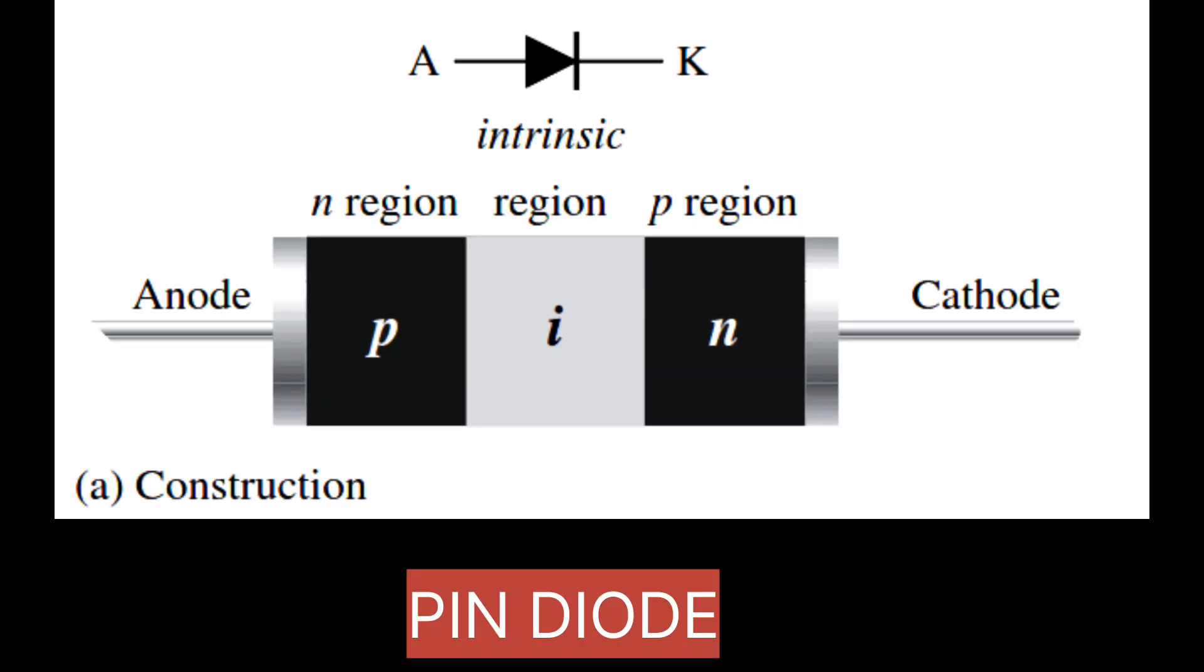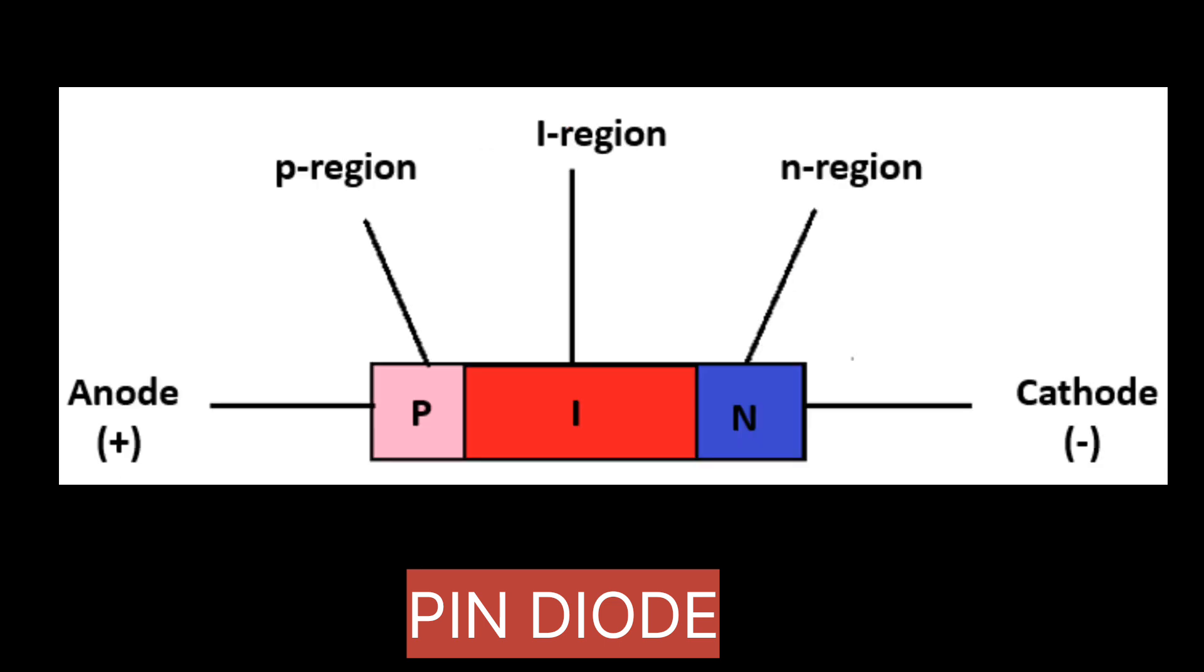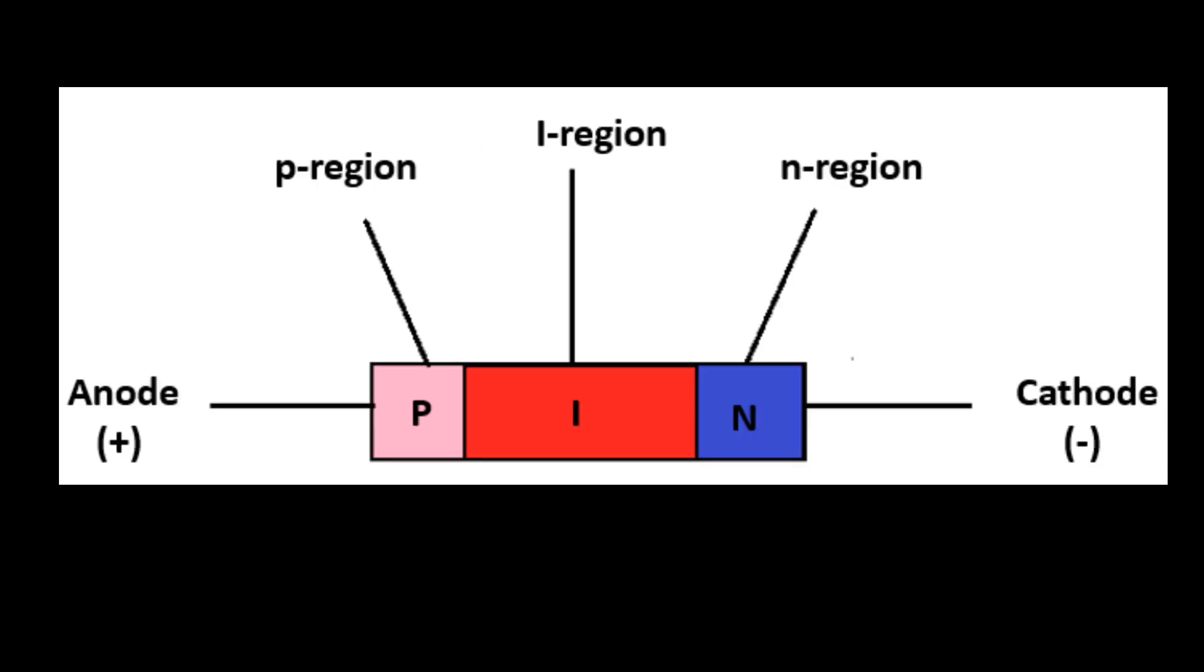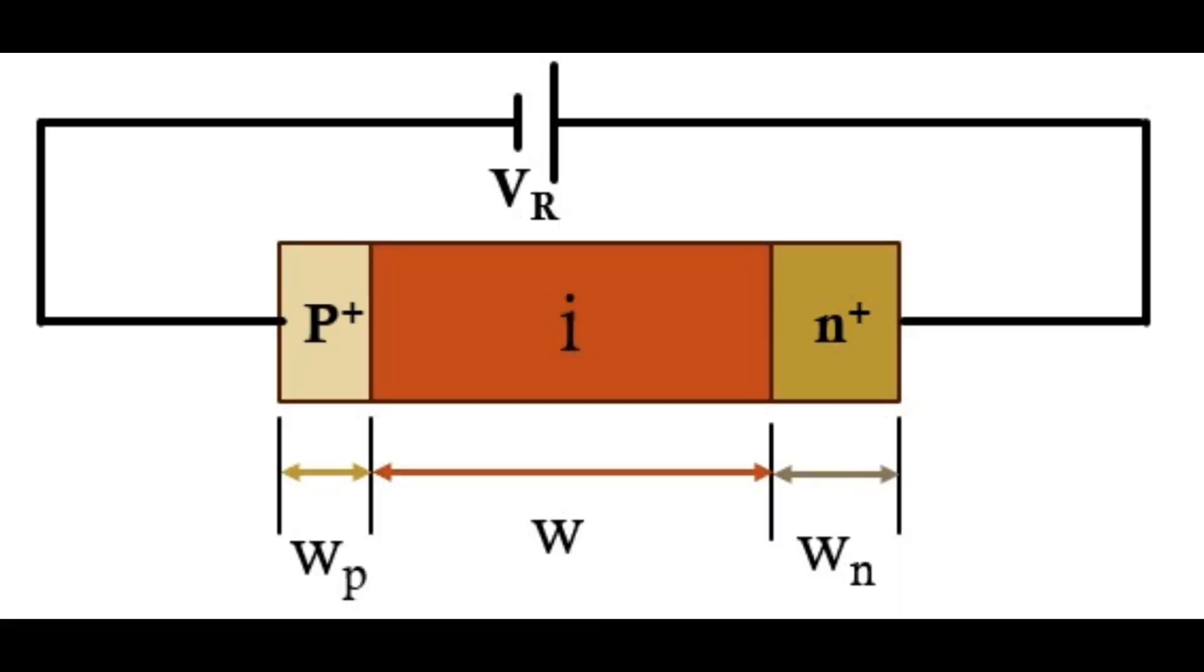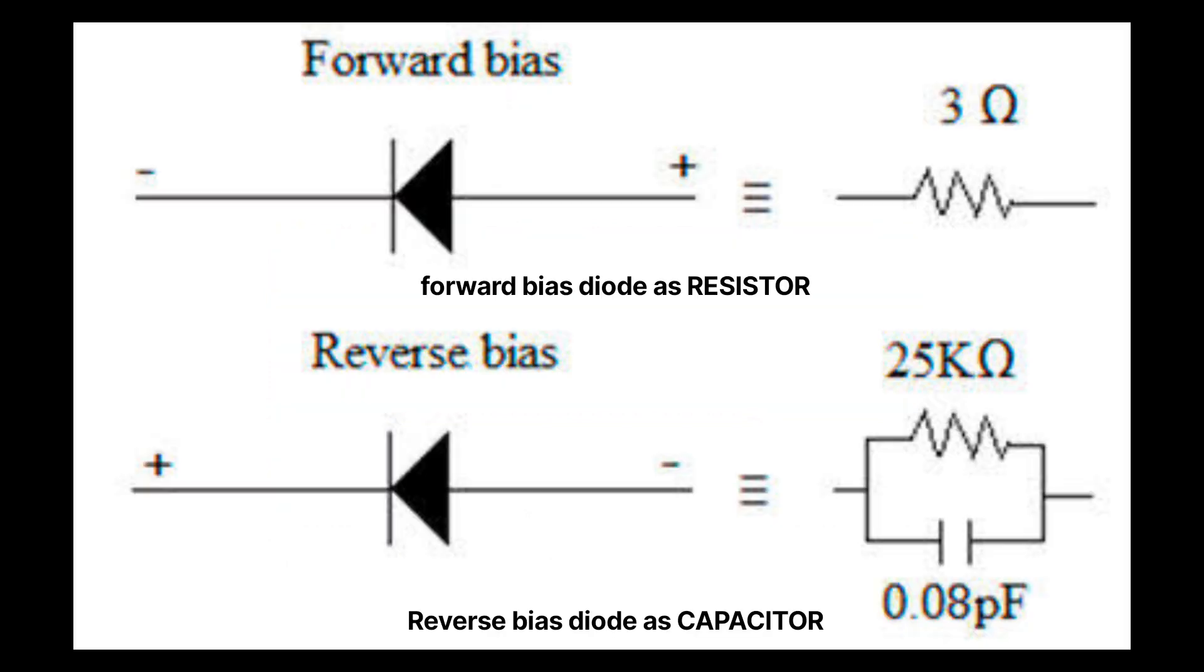Next we have PIN diode. PIN diode has a P type semiconductor layer, then I intrinsic layer, and then N type layer. That is why it is called PIN diode. When it is reverse biased, it acts as a capacitor, and when it is forward biased, it acts as a variable resistor. Because of this property, it finds application in many areas.